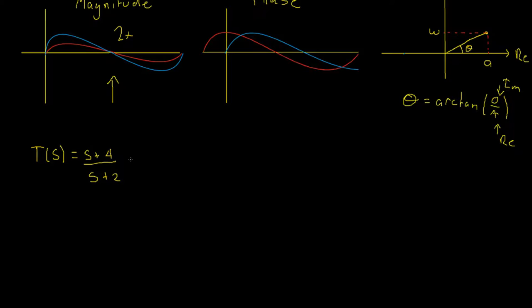Now, when we're taking the magnitude or phase, we like to rewrite this in the form of T of J omega just to make things clearer about which components are the imaginary and which components are the real. That equals J omega plus four divided by J omega plus two.